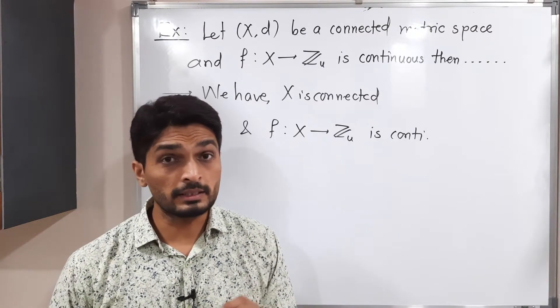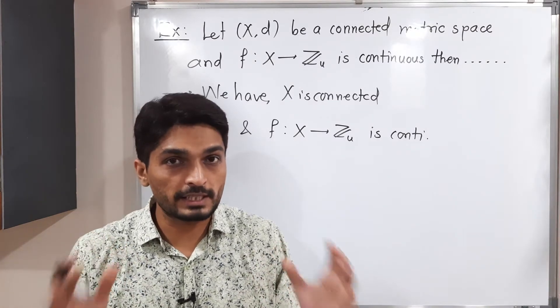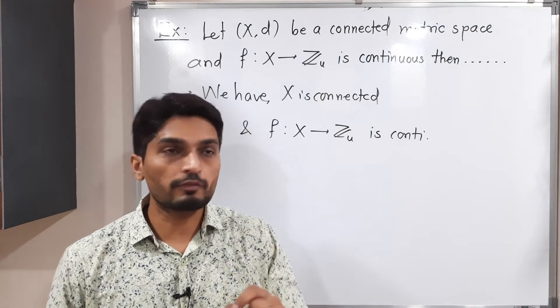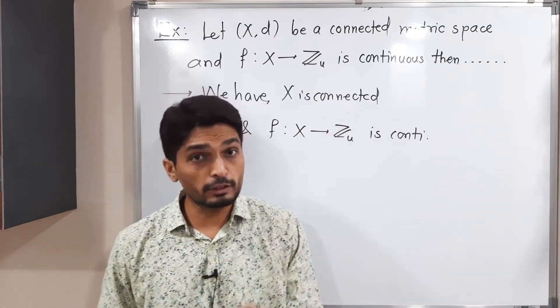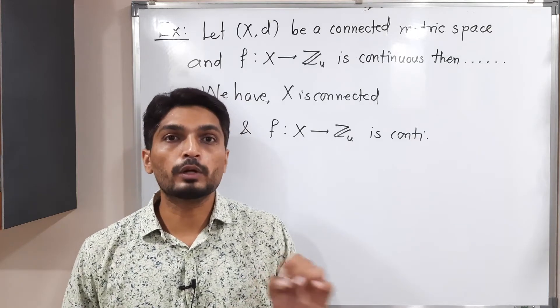Let us discuss this example. In this example, we have a metric space X,d which is connected, f defined from X to Z. Z with usual metric, that is continuous function. Then we have to conclude about f.